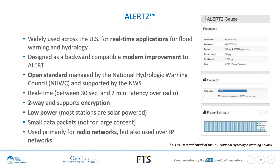Alert 2 is a two-way protocol and supports encryption for secure communications — features added to the protocol recently and now supported by vendors. It's a low-power protocol; most stations are solar powered. It transmits small data packets — not suitable for camera images, but excellent for environmental data like rain gauge and stream gauge data. While primarily used on radio networks, it is also supported over IP networks, so vendors have built interfaces to send Alert 2 content over cellular data networks.